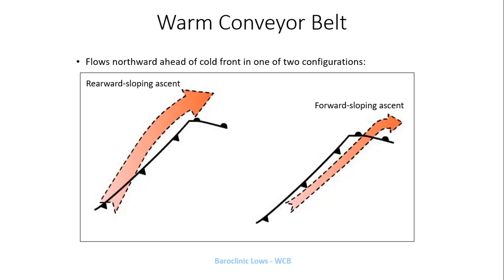With the rearward sloping ascent, you would most likely see precipitation even behind the cold front. With the forward sloping ascent, you get more convective thunderstorms, possibly a squall line, especially over the southeastern U.S. and Gulf Coast when you get really intense mid-latitude cyclones in the late fall — mainly the November time period. The way the warm conveyor belt slopes has a big impact on the type of weather you get: whether you get precipitation behind the cold front, or strong to severe thunderstorms out ahead of the cold front with immediate clearing behind it.